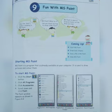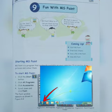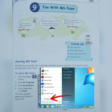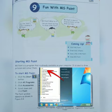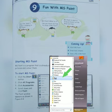Now how to start MS Paint program. The first step is click the start button. Second is click all programs. Next click on accessories. Scroll down and click on paint. The paint window appears.